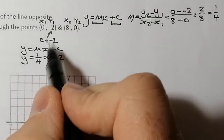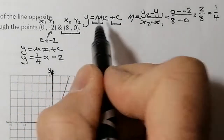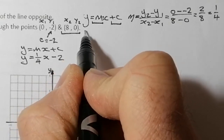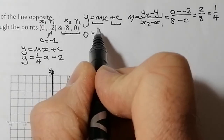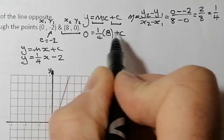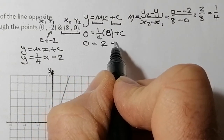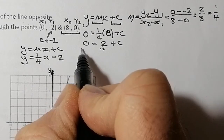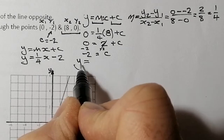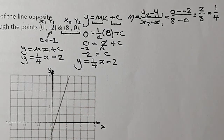Another option: if we didn't spot that, I could pick a point on the line — say the second point (8, 0) — and substitute the x and y coordinates into y = mx + c. So 0 = ¼ × 8 + c, which gives 0 = 2 + c. Taking 2 away from each side gives c = -2. Then the equation is y = ¼x - 2.